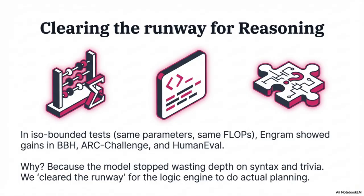They tested this on the long-context ruler tasks. The Enneagram 27B model showed huge improvements, especially in things requiring connecting distant information. The multi-query NIAH score, which measures associative recall, jumped from 84.2 for the MOE baseline to a stunning 97.0 for the Enneagram model.